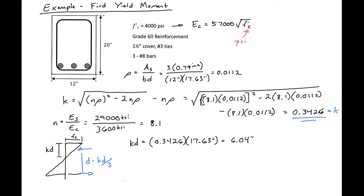So using this value, we can then find our moment. So our yield moment will just be equal to our As, 3 number 8 bars, times 60 ksi, our yield strength, times our jd, times our d, which is 17.63 minus our kd, 6.04 divided by 3. And this will give us a value of 2,221 kip inches.